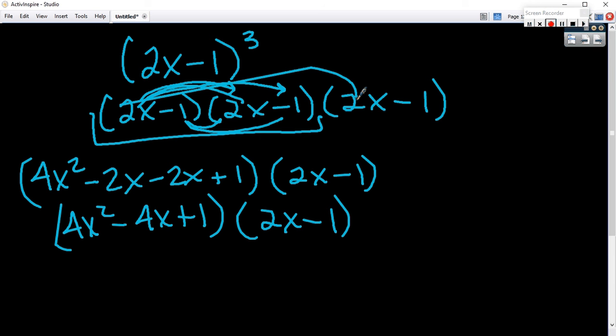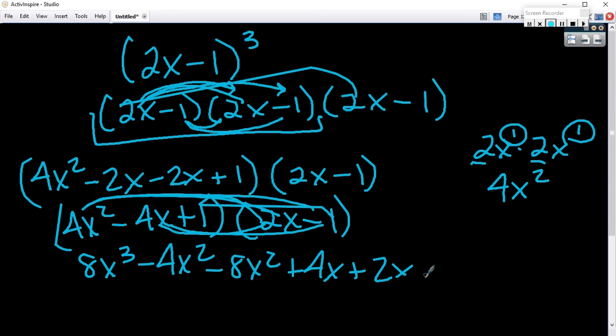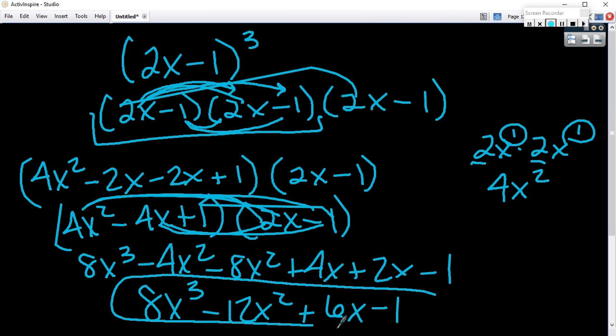Distribute this through again. 8x to the 3rd. And I'm just going to do this quickly because we've already done several examples. Minus 8x squared plus 4x plus 2x minus 1 gives 12x squared plus 6x minus 1. Yes or no?